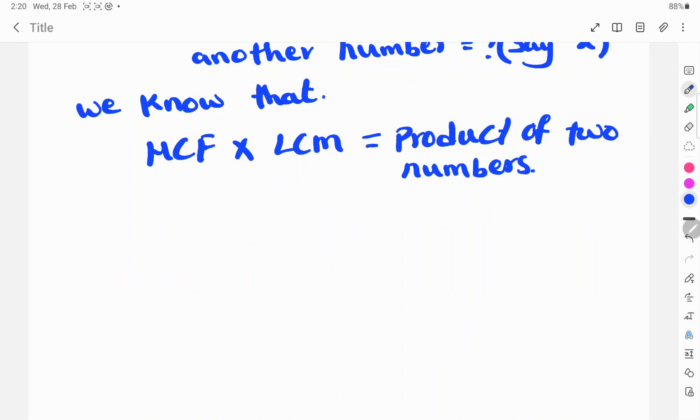Given HCF is 6 times LCM, LCM is 36, equals product of two numbers. One number is 12 and another number we say X.